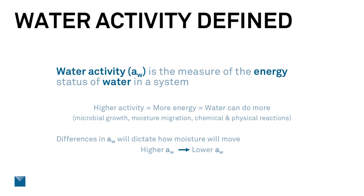Differences in water activity will dictate how moisture will move. This is in terms of energy, not concentration. Higher water activity will go to a lower water activity — meaning that water at a higher water activity has more energy than water at a lower water activity. How is it going to lower its energy status to become more stable? Migrate to a lower water activity.